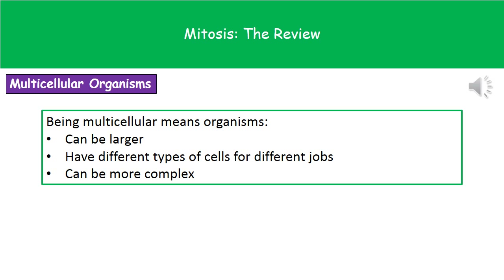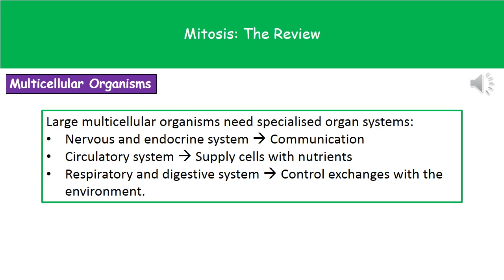One type of organism we need to consider is multicellular organisms. Being multicellular has a few important points: first, multicellular organisms can be much larger than single-celled ones. They've also got different types of cells that carry out different jobs, and therefore they can be more complex as organisms. One downside, though, is that for these multicellular organisms to actually work, they're going to need specialized organ systems.